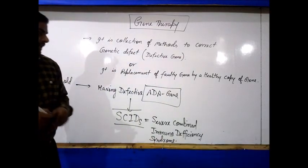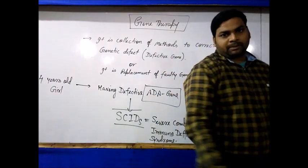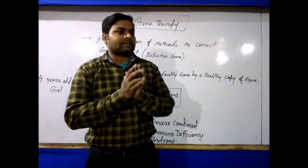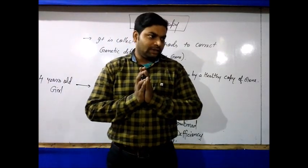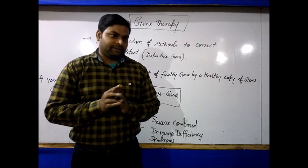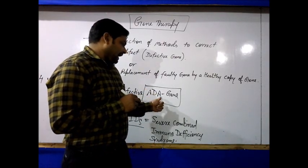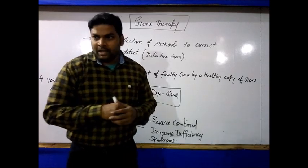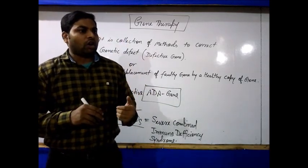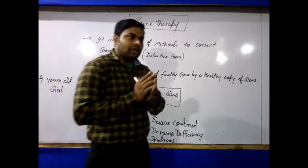What is this disease? Because the ADA gene's natural function is to produce a special enzyme called adenosine deaminase. This enzyme is very important for our B and T lymphocytes, which we also call B and T cells.